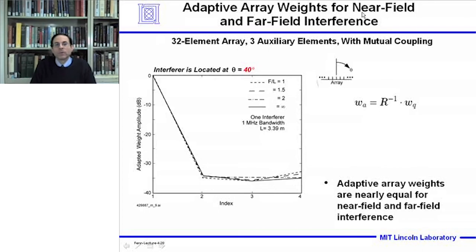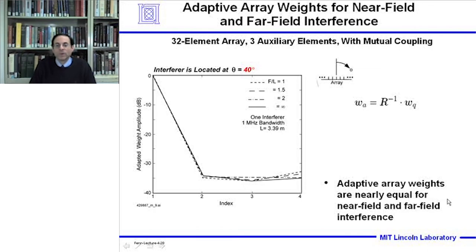Now let's show the adaptive array weights for the focus near field and focus far field cases — a 32-element array with three auxiliary elements with mutual coupling. With the main channel and three auxiliary elements, there are four adaptive weights. The main channel is set to 0 dB as channel 1, and channels 2, 3, and 4 are the auxiliary weights. The near field and far field cases are very similar, with the weights set to around minus 35 dB down from the main channel setting. We conclude that the adaptive array weights are nearly equal for focus near field and focus far field interference cases.